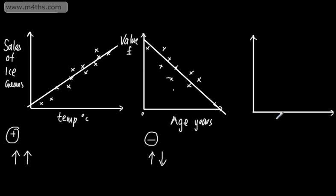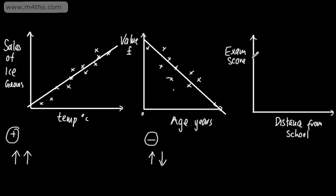Let's say we look at the distance from school that someone lives, and we compare that with their maths exam score. We wouldn't expect these to have any great relationship — an exam score vs how far away from school you live. You could say if you're spending longer on the bus then you're more tired, but generally speaking, if we did a scatterplot for this, we might see some points that could be absolutely anywhere. So what we could say from this is that there is no linear correlation.